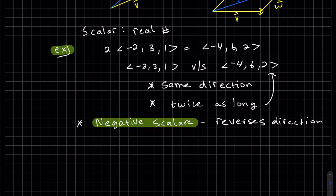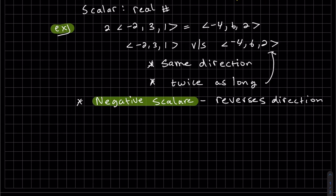So a negative scalar, it does reverse the direction when you multiply. Let's draw these geometrically.